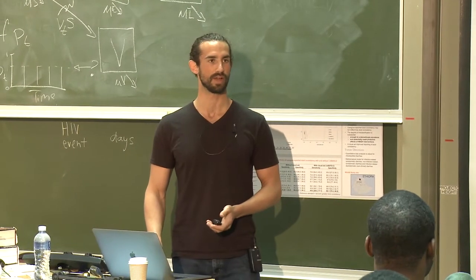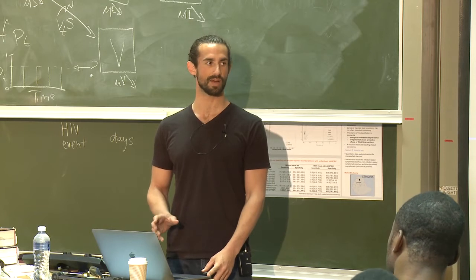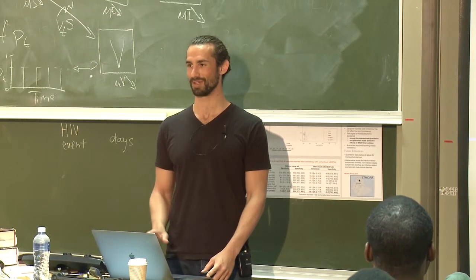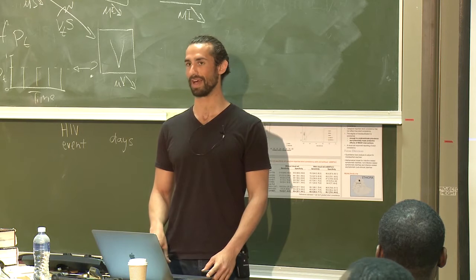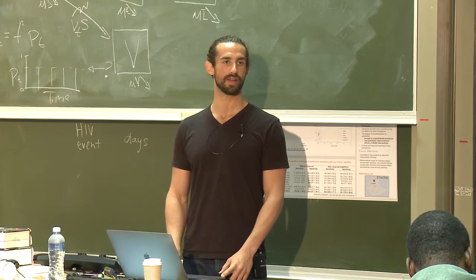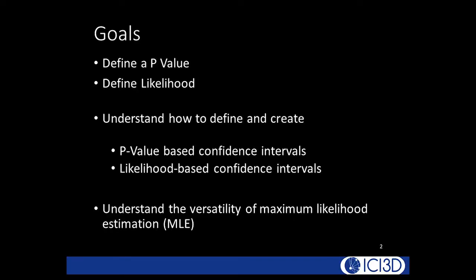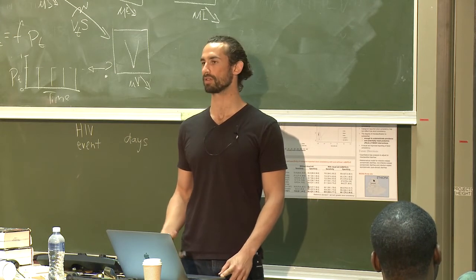Please stop me at any point if you have questions. The goals in this lecture are to start with a careful definition of a p-value, which Jonathan has already introduced and told you not to use as much as possible. But we're actually going to use p-values purely to create confidence intervals. We'll then define likelihood and understand how to create p-value based confidence intervals as well as likelihood based confidence intervals. Finally, I want to leave you with an idea of the flexibility and utility of maximum likelihood estimation as a method in statistics. This will feed into several more lectures over the next few days.